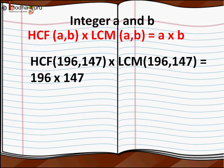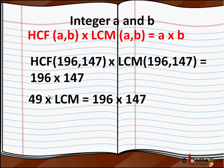So we know 49 is the HCF of integers 196 and 147. So using the above formula we can find the LCM. So a = 196, b = 147. So HCF(196,147) × LCM(196,147) = 196 × 147.